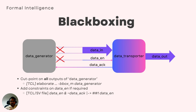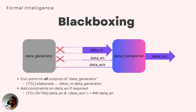After black boxing the data generator block, shown in gray color here, all the outputs are freely driven, shown using red cross marks. When verifying the data transporter module, you might not care about data_in, but you still might care about the value of data_enable. Let's say data_enable should stay high until data_ack is received from the data transporter. When you had the data generator block in the design without black boxing, that block made sure this rule was obeyed. Now without the data generator block, it can take any value at any time and even keep toggling every clock. This will lead to false failures when you check that the correct data_in reaches data_out of the data transporter block. These false failures can be overcome by adding an assumption or constraint on the free signal data_enable.